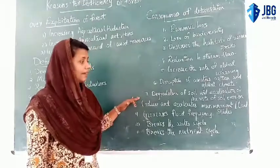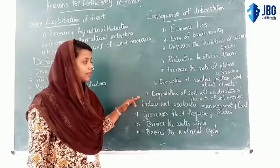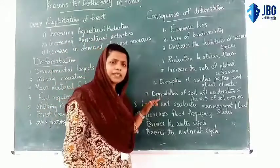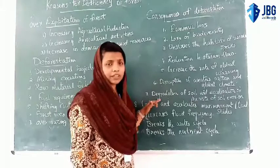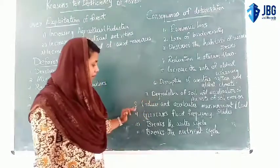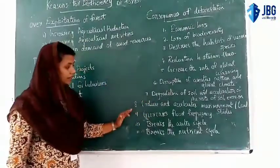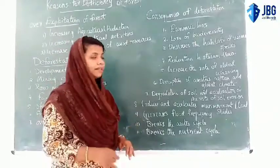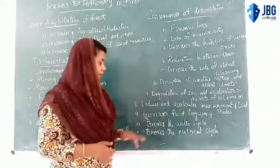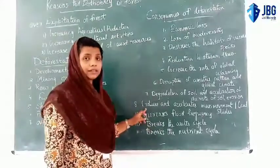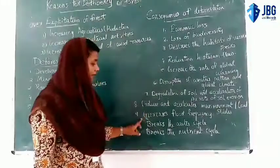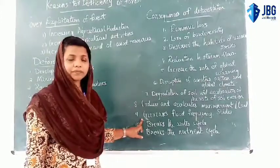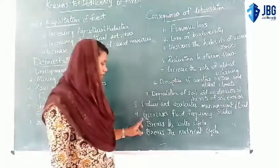Seventh consequence is degradation of soil and exacerbation of soil erosion — the soil layer is degrading. Eighth is increased landslides and soil layer instability. Ninth is increase in flood frequency — flood frequency is increasing.